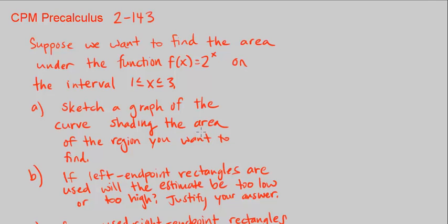This is CPM Pre-Calculus Chapter 2, number 143. Suppose we want to find the area under the function f of x equals 2 to the power of x on the interval from 1 to 3.